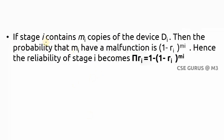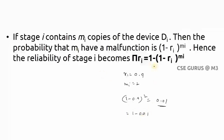If stage i contains m_i copies of device D_i, the probability of malfunction is (1 - r_i)^m_i. For example, with reliability r1 = 0.9 and two copies, the malfunction probability is (1 - 0.9)^2 = 0.01, so the reliability becomes 1 - 0.01 = 0.99.